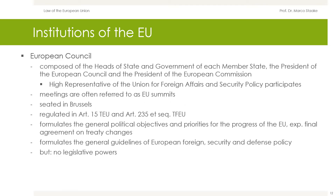The European Council is composed of the heads of state and government of each member state, as well as the President of the European Council and the President of the European Commission. The High Representative of the Union for Foreign Affairs and Security Policy participates in its work. The meetings of the European Council are often referred to as EU summits. The European Council has its headquarters in Brussels; it is standardized in Article 15 TEU, with details regulated by Articles 235 following TFEU. The European Council formulates the general political objectives and priorities for the progress of the EU and is therefore regarded as the pacemaker for the further development of the European Union.